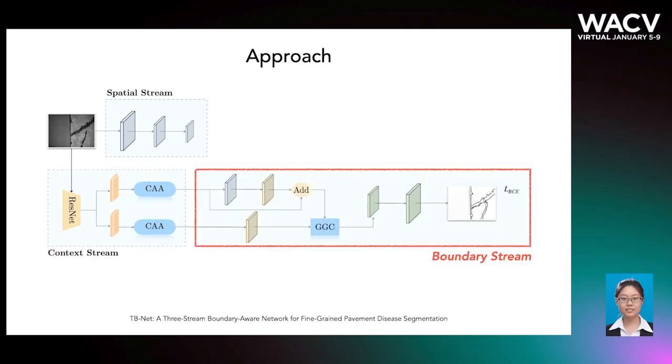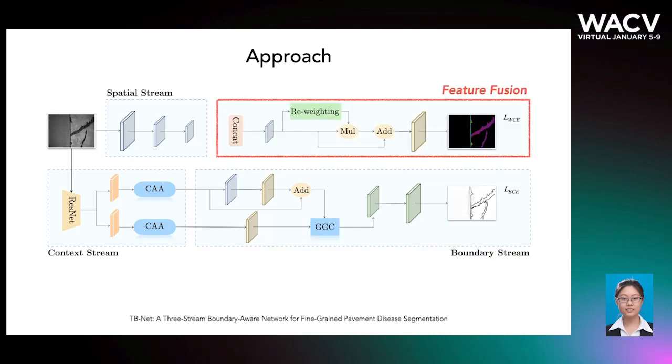In the boundary stream, a gated convolution module is applied which highlights the relevant information and filters out the rest to better generate the boundary representations. In the feature fusion module, different types of features are fused to produce the refined segmentation outputs.